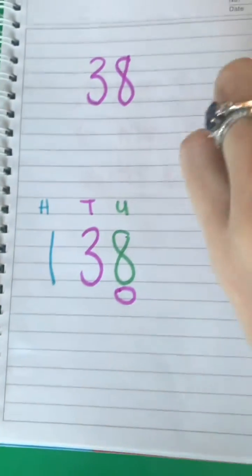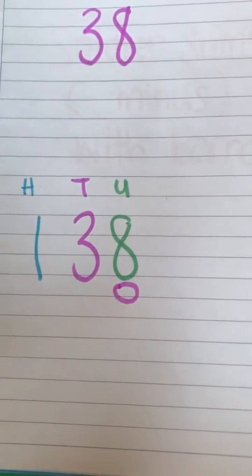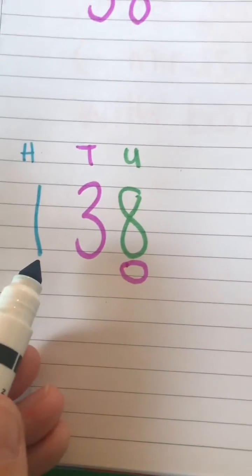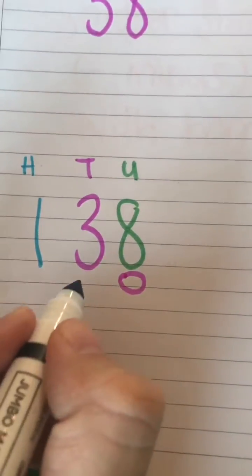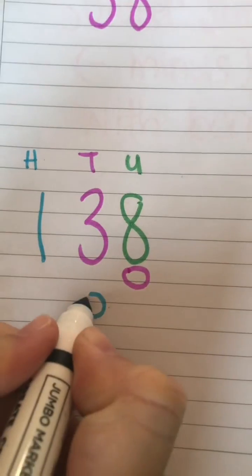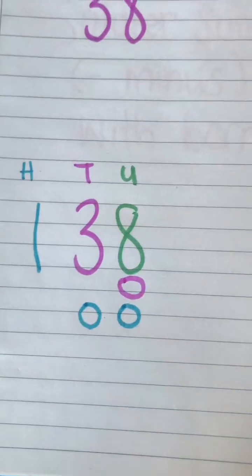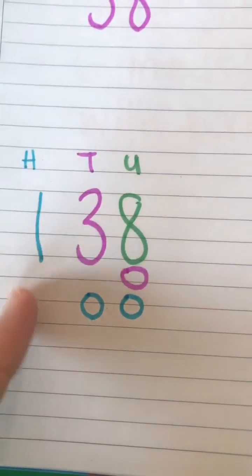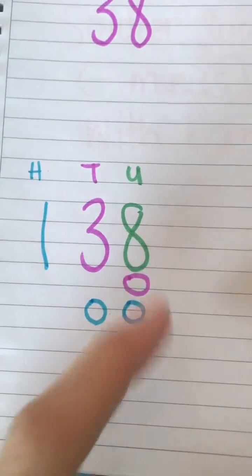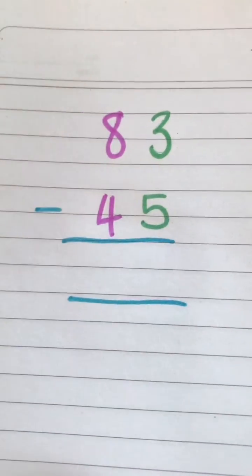So this is actually 30. Just the same with the hundred—it's not actually a 1, okay? It stands for a hundred. It's like there are two little zeros hiding behind these two numbers. So this is actually 138. All right, let's